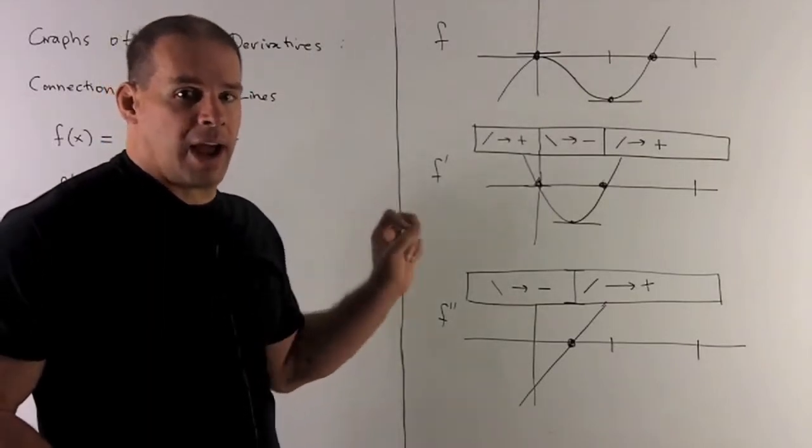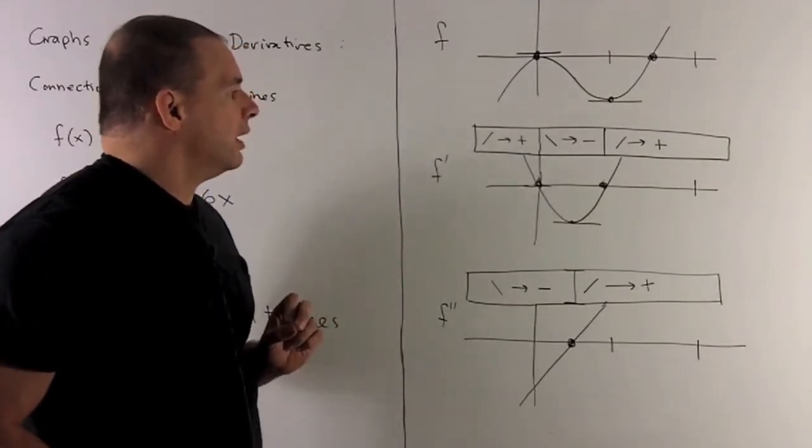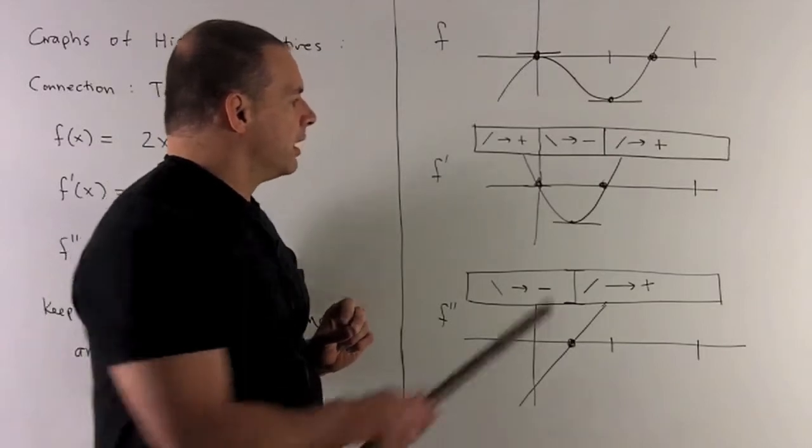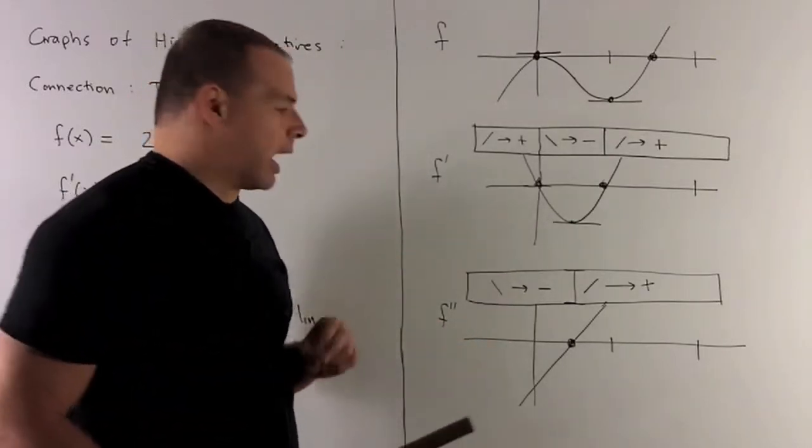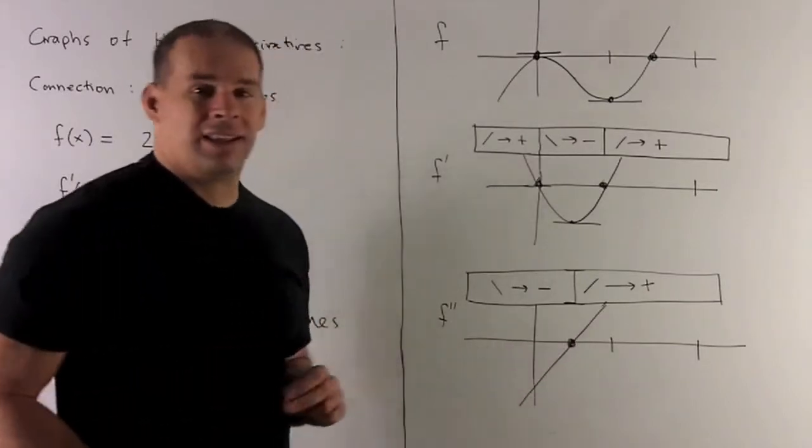Let's go from f prime to f double prime. Here, where's the horizontal tangent line at? That's going to show up at 1 half. So, when I go to f double prime, that's just going to be where we hit the x-axis.